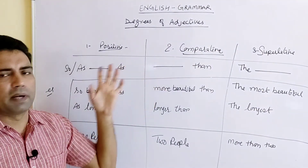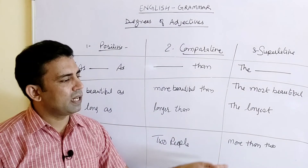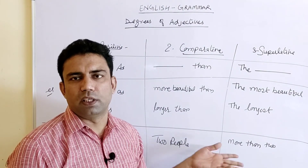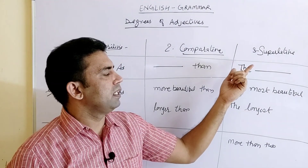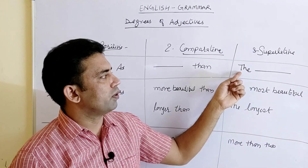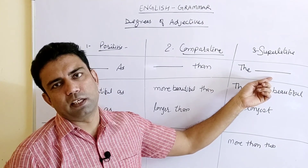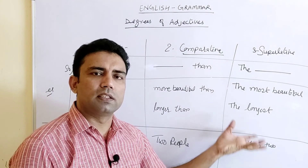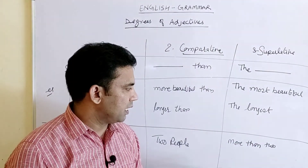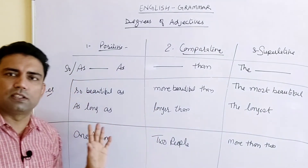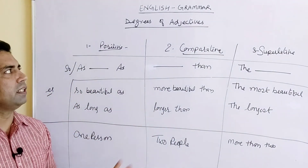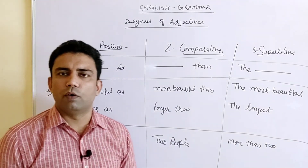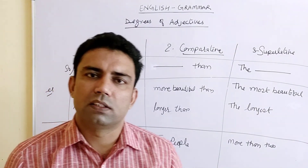When the comparison is between more than two people — maybe ten, twenty, a hundred, or a thousand — we use the superlative degree, using 'the' followed by the superlative form of the quality, like 'the most beautiful' or 'the longest'. You can see the difference between all three degrees here. This covers the chapter on degrees of adjectives. Hope you understood. Thank you very much.